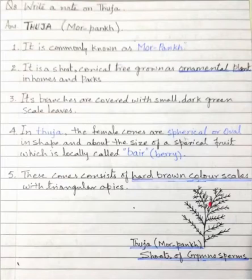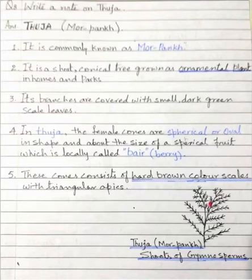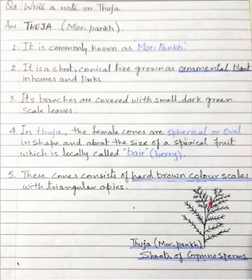The last point: these cones consist of hard brown colored scales with triangular apex. Now you have to draw the diagram of thawja on the blank page. In the book, it is on page 99, Figure 6.6: shoots of gymnosperms.